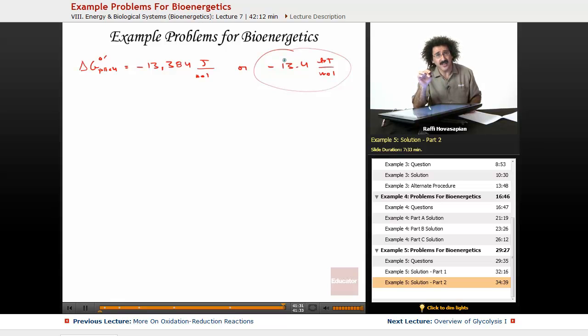Notice, this has confirmed the fact that it is less exergonic than the negative 30.5. We knew what was going to happen qualitatively. Now we took care of it quantitatively. This confirms it.